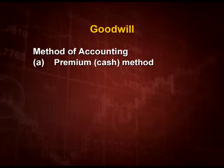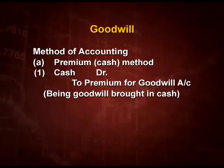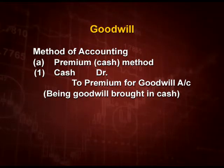Point number 1: The first method is the premium method, that is the cash method. When the new partner brings in cash for his share of goodwill, the entry is: Cash Account debit to Premium for Goodwill Account. The new partner brings in goodwill in order to compensate the old partners for their past efforts. The entry is cash account debit to premium for goodwill account, being goodwill brought in cash.